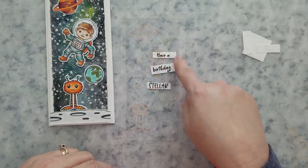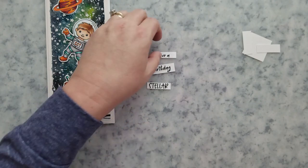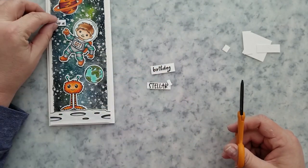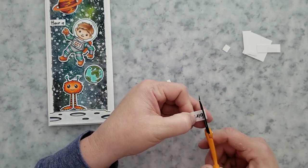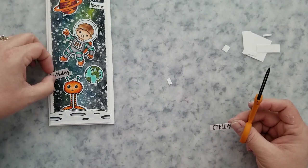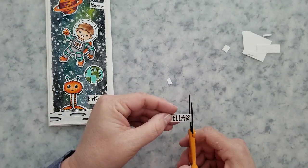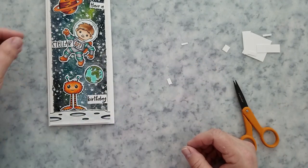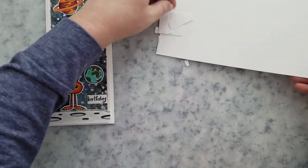Now I stamped my sentiment, have a stellar birthday from the stellar sentiment set. And then I just trimmed them down with my paper trimmer and my scissors. I'm going to take some of that leftover foam board that I had the adhesive foam board. And I'm going to add that to the back of this and then go ahead and place it on the card. And then that's it. We're done.